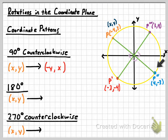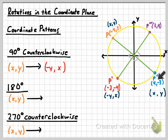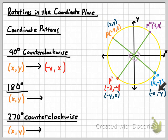Now let's compare point P double prime to x, y. The numbers are in the same basic positions — four first and three second, just like the original. The x coordinate is still in the x position and the y coordinate is still in the y position. For the signs: I started with negative four and after the 180-degree rotation had positive four — so we get the opposite of the x coordinate. And I started with positive three and after 180 degrees had negative three — so we also get the opposite of the y coordinate. Whenever you rotate a point 180 degrees, that point x, y gets mapped to negative x, negative y.